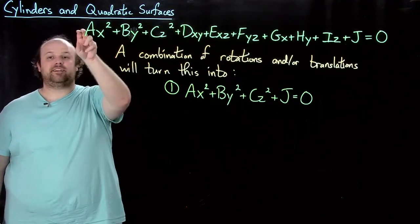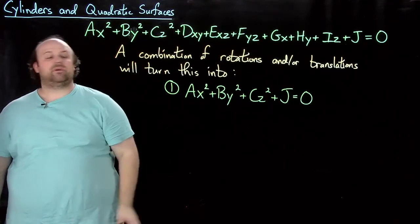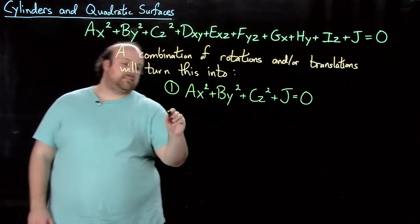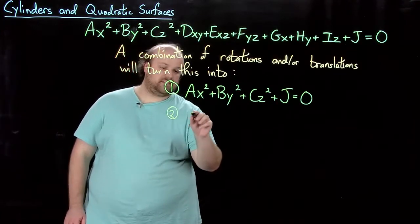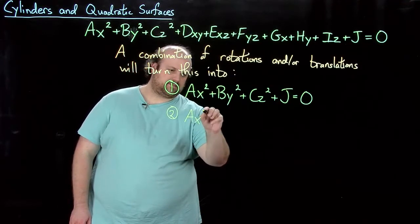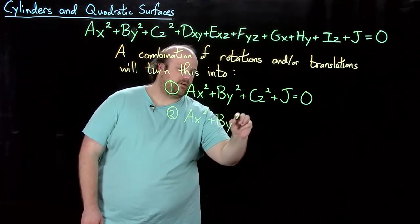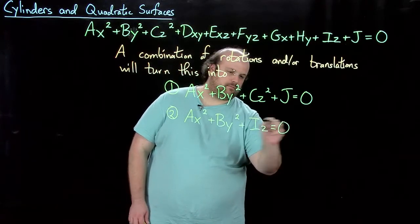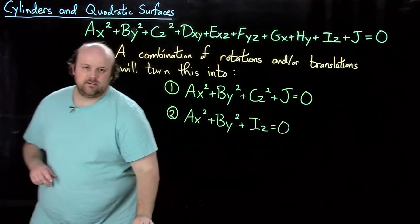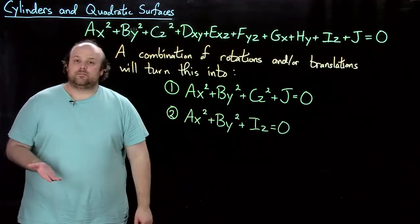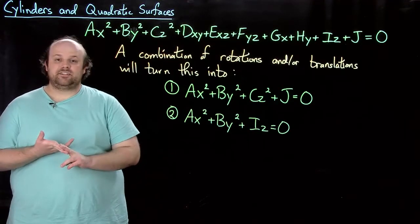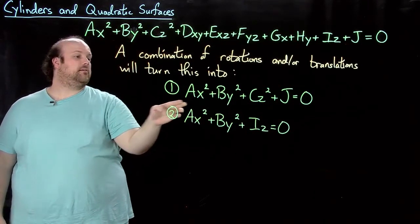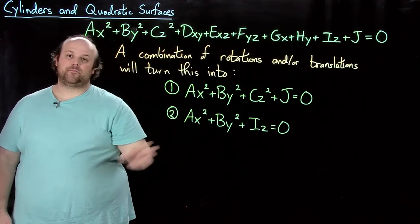If we're given a particular equation of this type up here, we might be able to turn it into that. If we can't turn it into that, the other option is this. We could also turn it into Ax squared plus By squared plus Iz equals 0. That's the other possibility. So through rotations and translations, this up here can be turned into one of these or one of these.